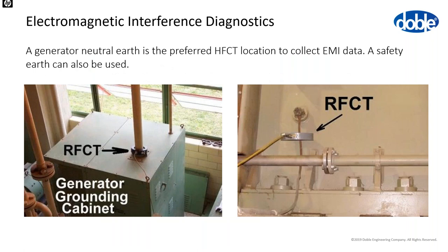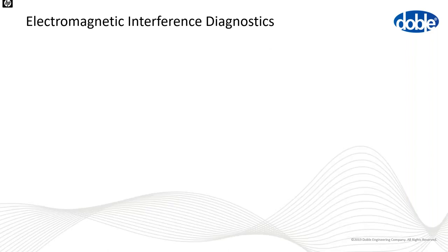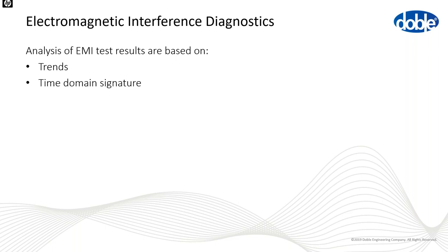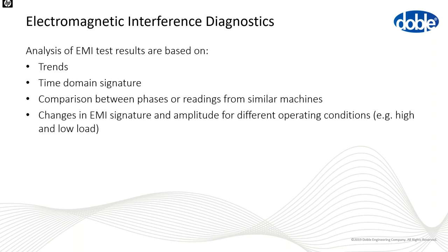For generators, we typically prefer the neutral earth for HFCT placement, but we can also use a safety earth or previously installed passive couplers depending on site conditions. For motors, we typically clamp onto a power cable or power conduit, or a safety earth if neither is available. Analysis of EMI test results is typically based on trends over time, time-domain signature shape, comparisons between phases or similar machines, and changes in signature with different operating conditions.